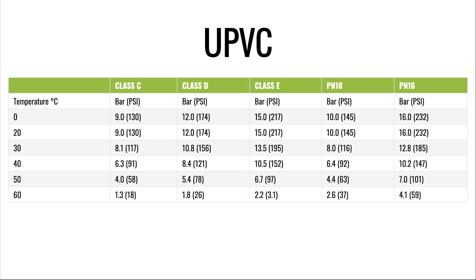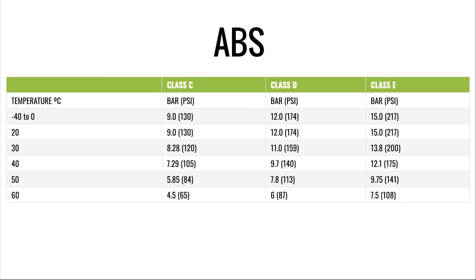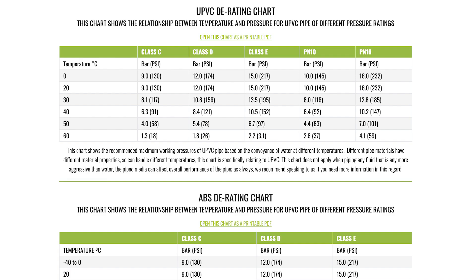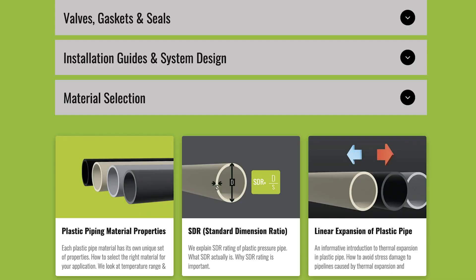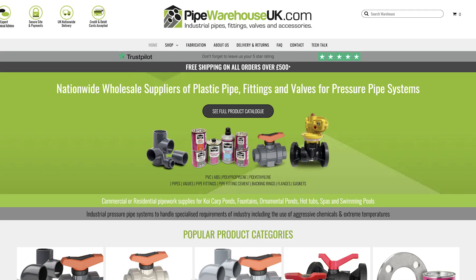Each plastic pipe material will derate differently, so consult a derating chart specifically for your plastic pipe material if you are expecting to pipe at elevated temperatures. Using these charts you can find the maximum operating pressure for different temperatures for UPVC and ABS pipe. Downloadable charts for all pressure pipe materials and other resources can be found over at pipewarehouseuk.com.